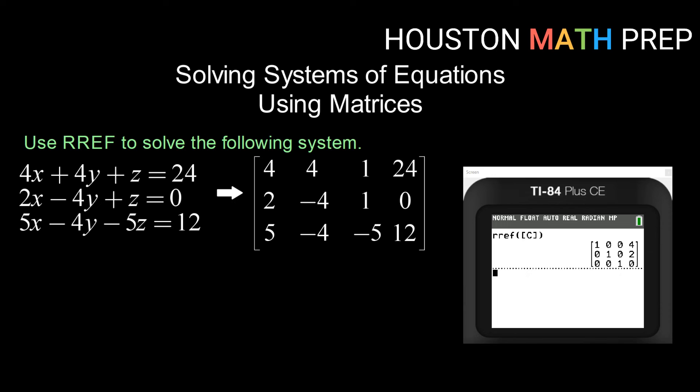Okay, here, this is kind of the same idea. We've got three variables now. So our top row, one, zero, zero, four, is telling us that our first variable is equal to four. So x equals four. The next row, zero x's plus one y plus zero z's equals two. So that's y equals two. And then our third row, zero, zero, one, zero. So that means zero x's plus zero y's plus one z equals zero.